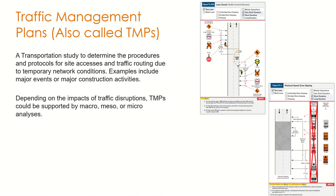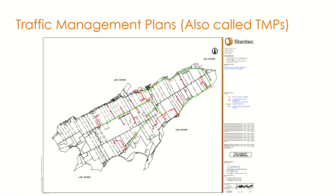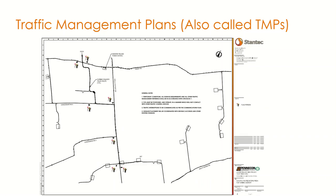Depending on the impact of the traffic disruption, TMPs could also be supported by some level of macro, meso, or micro analyses. If the traffic disruption is expected to be small in impact and temporary, a traffic analysis is sometimes not required — the procedure is mainly what's looked into. An example from a previous Stantec study showing a construction zone is shown in this slide, along with areas where flagmen will be placed to redirect and reroute traffic.